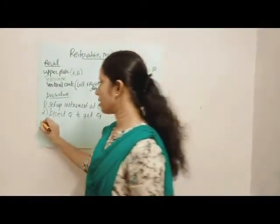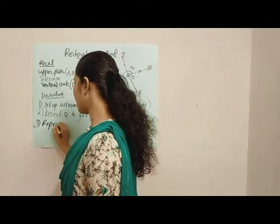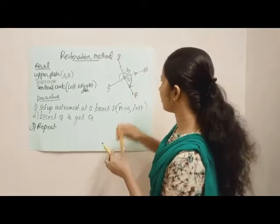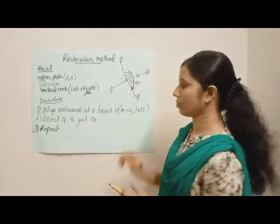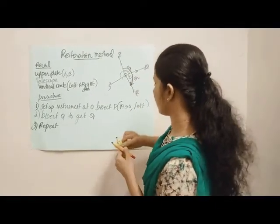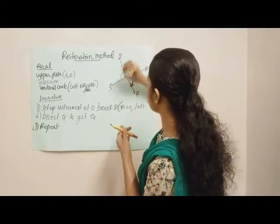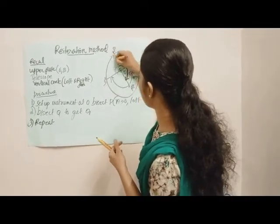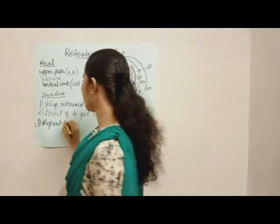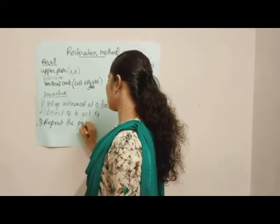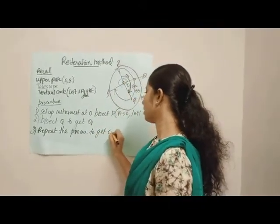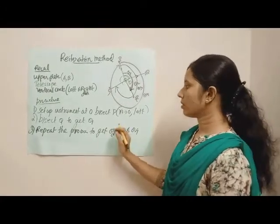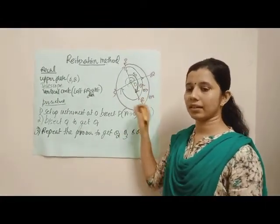The third step: repeat the previous procedure to get the other angles — theta 2, then theta 3, and also the last angle, theta 4. Repeat the process for the measurement to get angles theta 2, theta 3, and theta 4. Note that all these observations are taken in the left face condition.